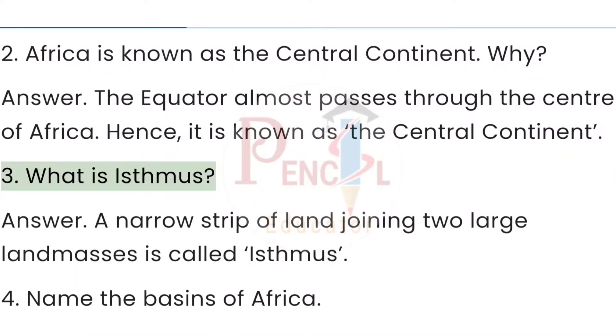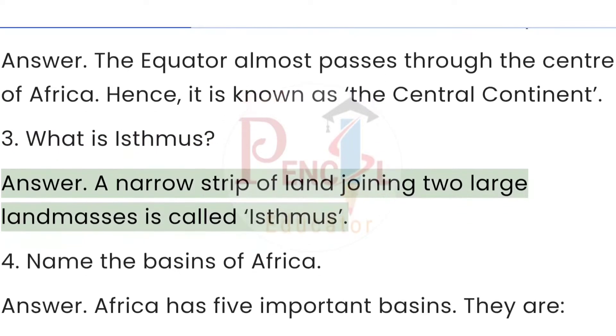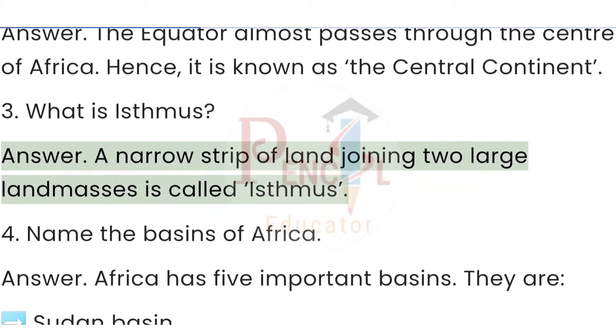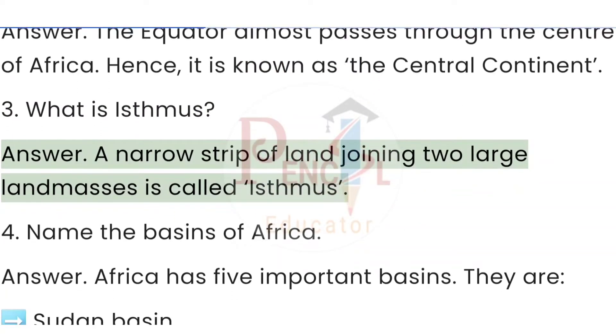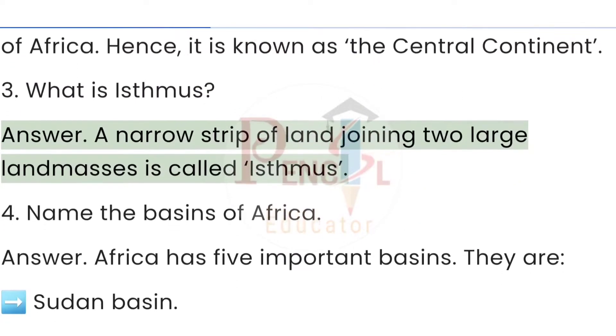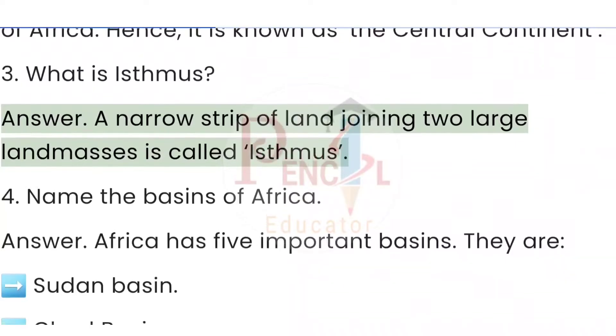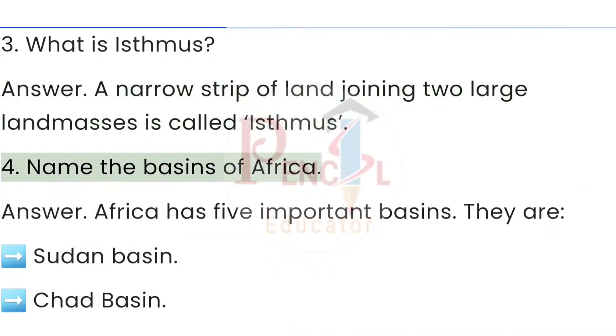Question 3: What is an isthmus? Answer: A narrow strip of land joining two large landmasses is called an isthmus.